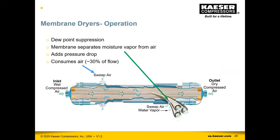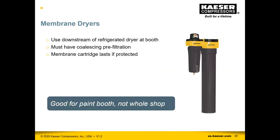Another single-tower option is a membrane dryer. It looks identical to a filter canister but contains a bundle of very fine membrane tubes that allow moisture vapor to separate from air. It does consume a small amount of air and adds some pressure drop. If you have a small application and want to add dew point suppression at the point of use, a membrane dryer is a cost-effective way to do that — great for the paint booth, not for the whole shop. You must protect the membrane from oils or it will not work.